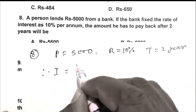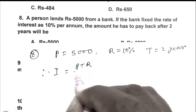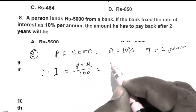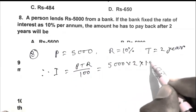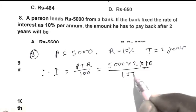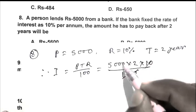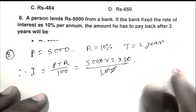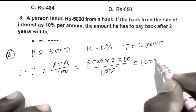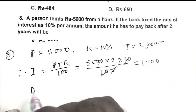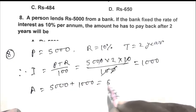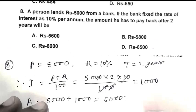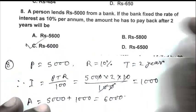So friend, interest PTR upon 100. That is P 5000, T 2, R rate 10% upon 100. That is 1000. So amount 5000 plus 1000. That is 6000. So friend, C is the right answer.